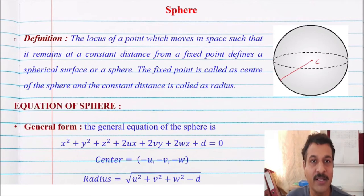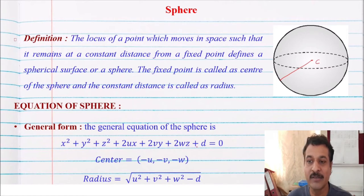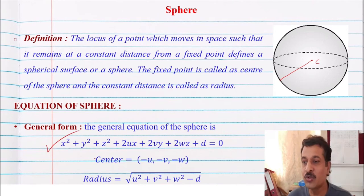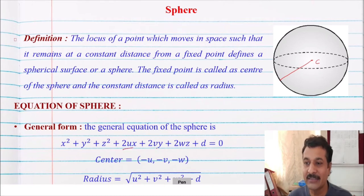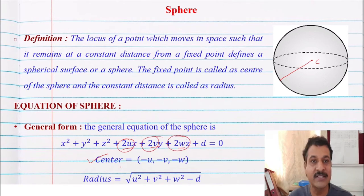Without fail you have to remember the general equation of a sphere. It is: x squared plus y squared plus z squared plus 2ux plus 2vy plus 2wz plus d equal to zero. If we have the equation of a sphere, we need to know how to find its centre. In the equation of the sphere, find the coefficients of x, y, z and divide each by minus 2. So dividing by minus 2 for each, the centre is (minus u, minus v, minus w).